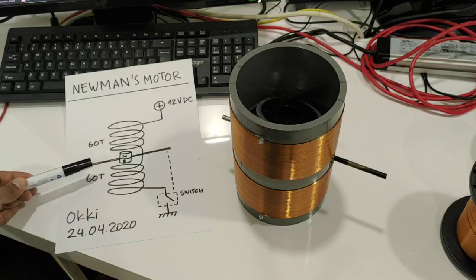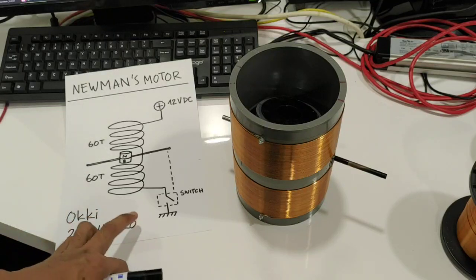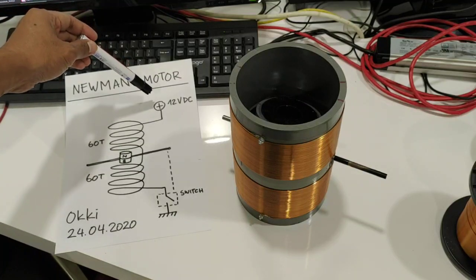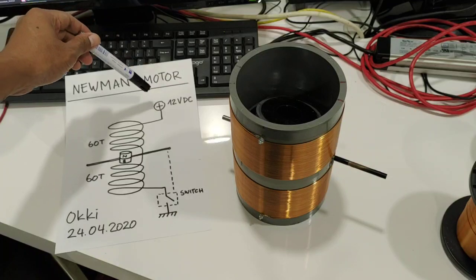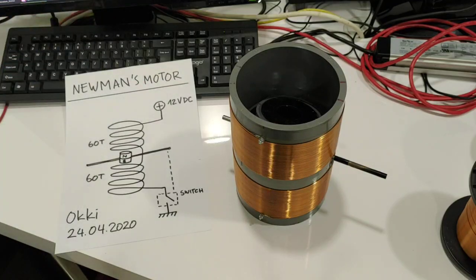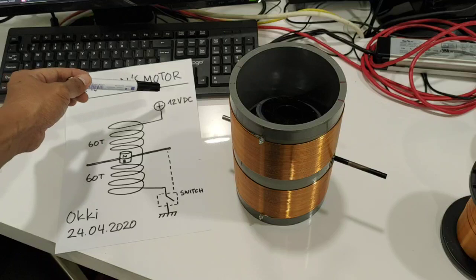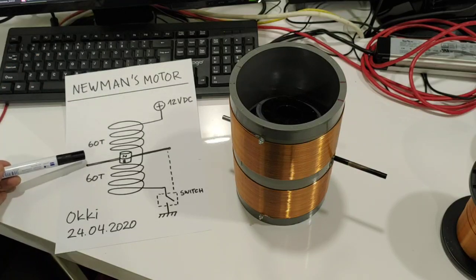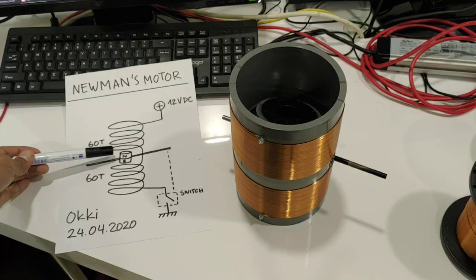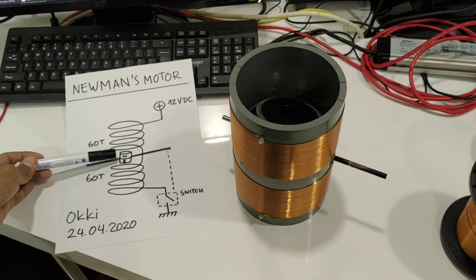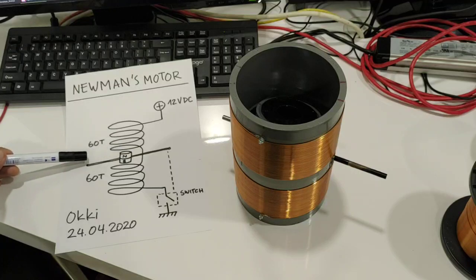For the power supply we can use actually any voltage. I use 10 to 12 volt DC for this motor. And then for the rotor I have four ring magnets attached to the shaft.